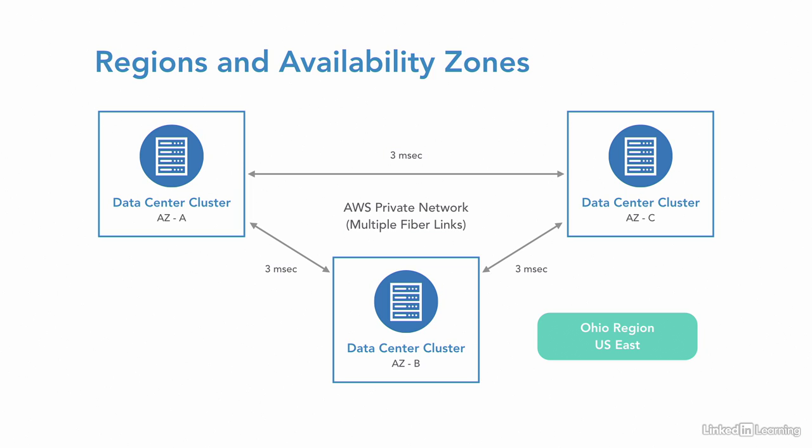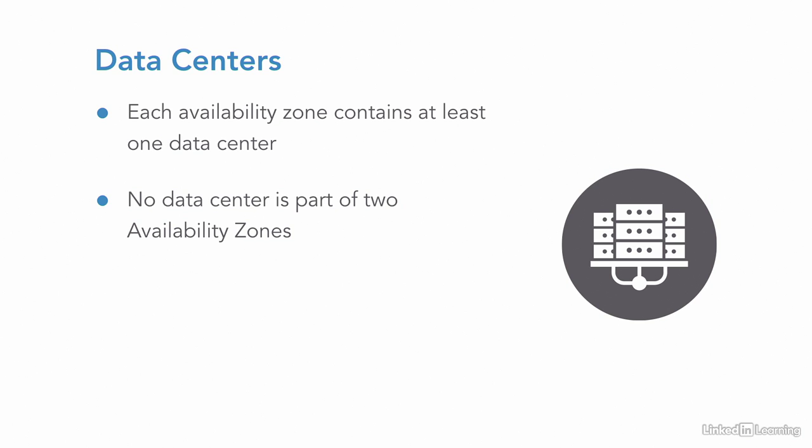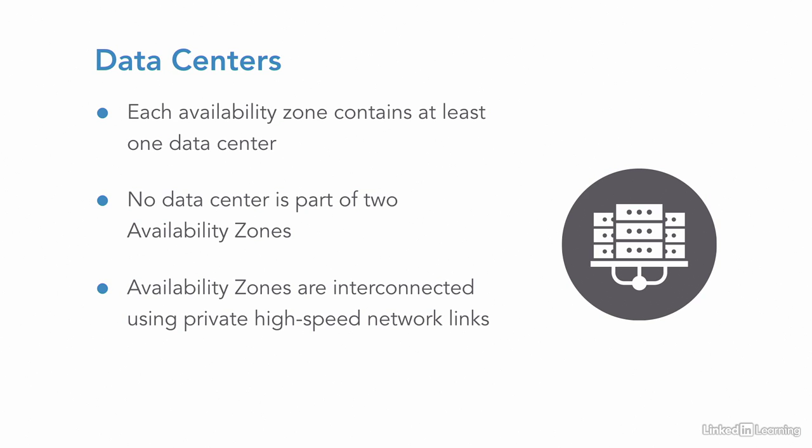An availability zone consists of at least a couple of data centers. This example shows the Ohio region, which has three availability zones. We don't know exactly how many data centers are in each availability zone — Amazon doesn't give this information away other than saying each availability zone has a couple of data centers, which can be thought of as a data center cluster. The data centers within an availability zone have fast response times between them, are completely independent of one another, and the availability zones within each region are connected using high-speed private fiber network links.